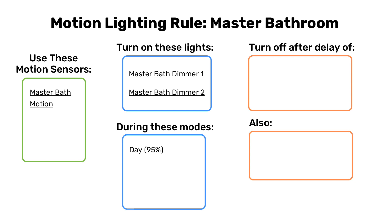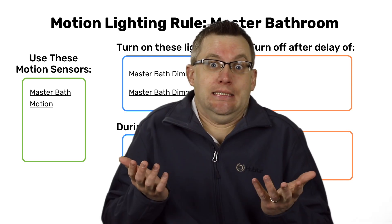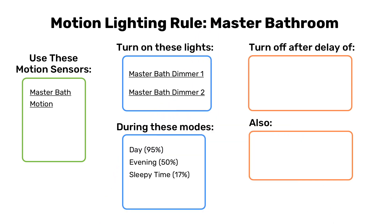In the evening, we'll drop it down to 50%. In sleepy time mode, we only want that at 17%, which is dark enough that it won't blind us, but light enough that us gentlemen won't miss the bowl. The lights will turn off automatically when no motion is detected, but we're going to delay turning the lights off by 4 minutes during the day and evening, and 1 minute during sleepy time.